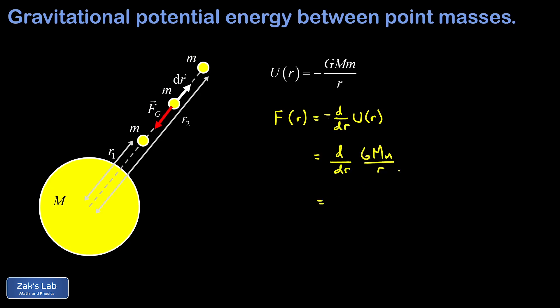When I differentiate this, that's all constants in the numerator, and then an R to the negative one, which differentiates to negative one over R squared. So now I end up with another minus sign and I end up with negative G M m over R squared.